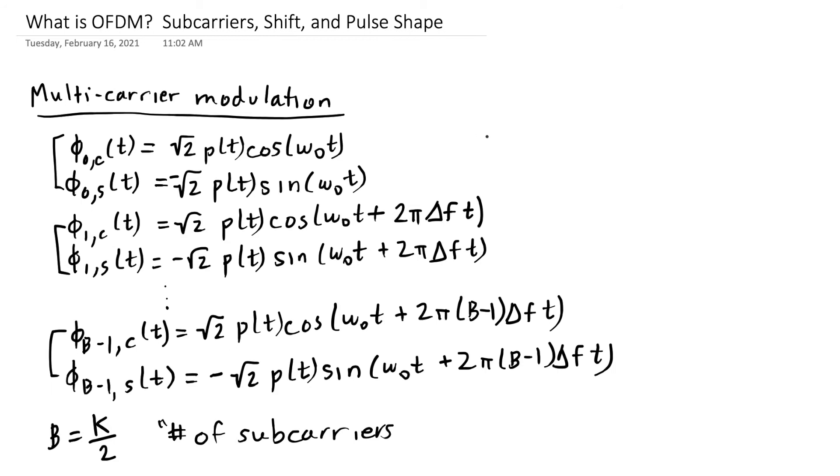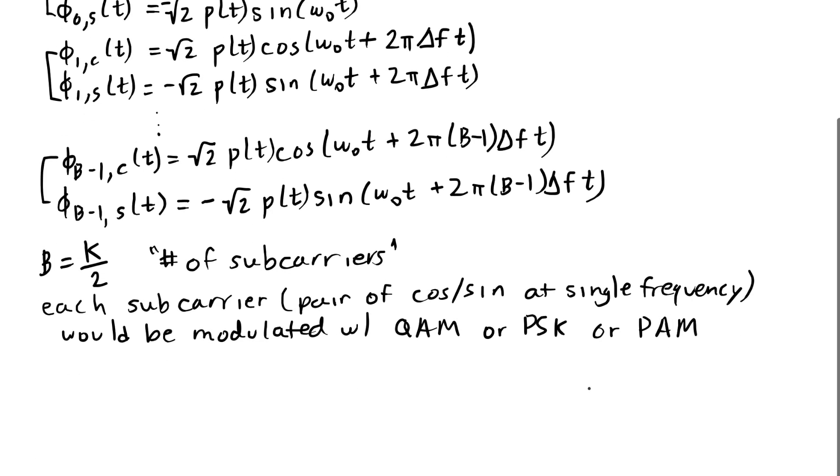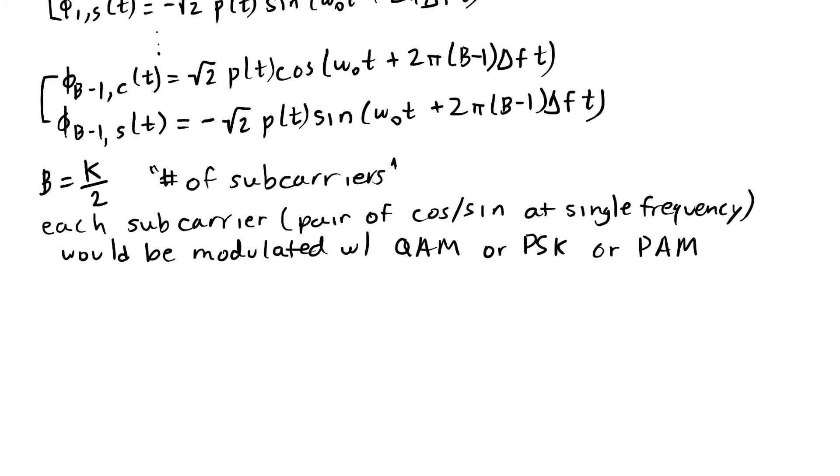Each subcarrier is going to be like a QAM system. So we might modulate each pair with some particular QAM. Because each pair gets modulated by a list of possible symbols along those two axes,